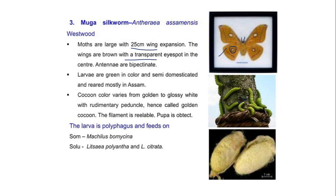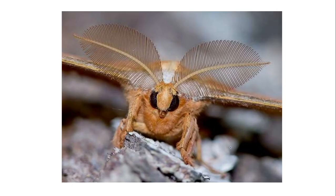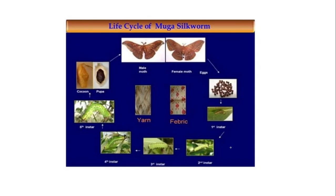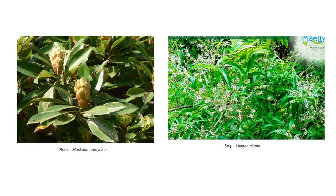The larvae are green in color, semi-domesticated, and reared mostly in Assam. Cocoon color varies from golden to glossy white with a rudimentary peduncle — hence called golden cocoon. The filament is reelable. The pupa is obtect type. The larvae is polyphagous and feeds on som and sualu plants. This is the mooga silkworm adult, life cycle of mooga silkworm, som host plant, and sualu host plant. Thank you.